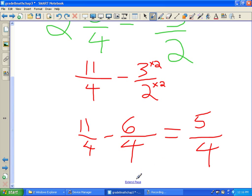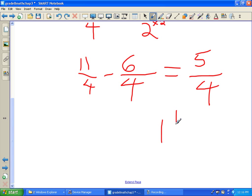And we're going to be left with eleven take away six, which is five over four. And, of course, you know five over four can be written as one and one-quarter. If you change it back to a mixed number.